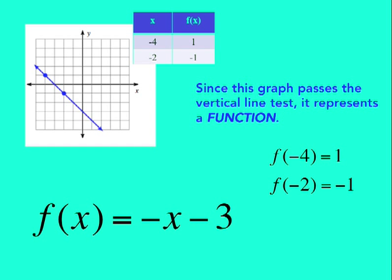This tells us that this function, when evaluated where x is equal to negative 4, will have a value of 1. And if this same function is evaluated where x is negative 2, the function has a value of negative 1. You can see that the x and y values came directly out of our table.